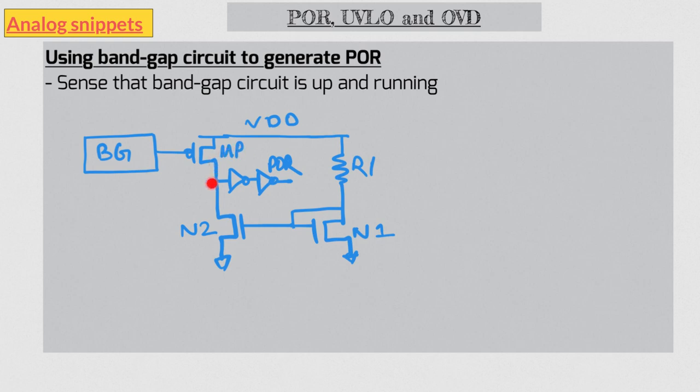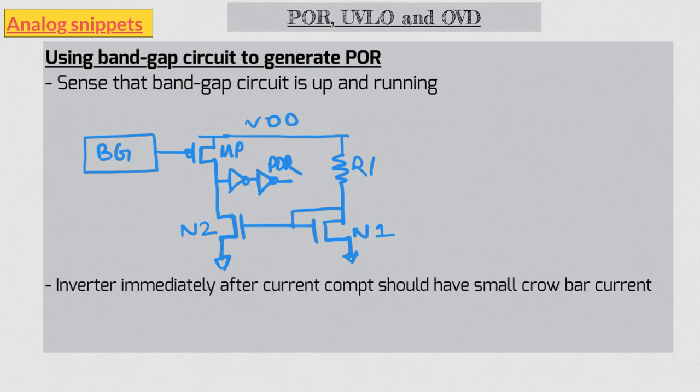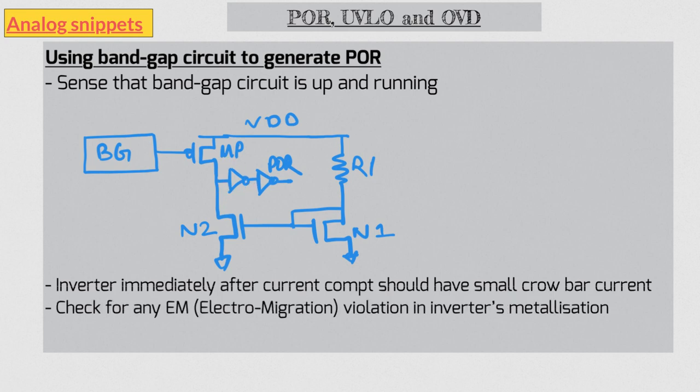But a typical digital inverter is designed for either a zero or a one input signal. A slowly ramping input signal can result in a large crowbar current through this inverter. So design this inverter to have a small crowbar current. Also check that there is no EM or electromigration violation in the metal of this inverter, and that is because a typical digital inverter is not designed to sustain a large current for large durations.